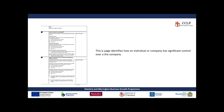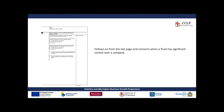The following page concerns the same individual and identifies how that company or individual has significant control over this company. As mentioned, the person must have met one of the three requirements, and you simply select how that person has control. There is also an extra section for where it is a trust — not an individual or a company — that has significant control over the company. If a trust has significant control, you select on this page with their details in the prior section.